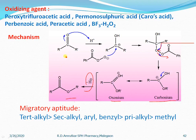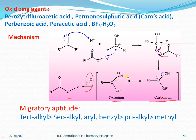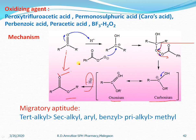To summarize the Baeyer-Villiger oxidation mechanism: first, protonation of the carbonyl; second, nucleophilic attack of the peracid on the protonated carbonyl carbon to form a peroxide intermediate; third, removal of the carboxylate anion with migration of the alkyl group onto the electron-deficient oxygen to form a protonated ester; and finally, loss of a proton to give the ester product. This is the conversion of a ketone into an ester in the presence of a peracid.